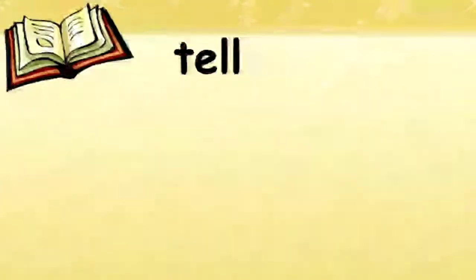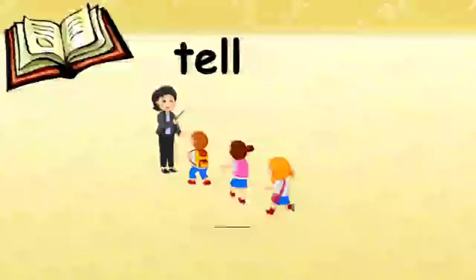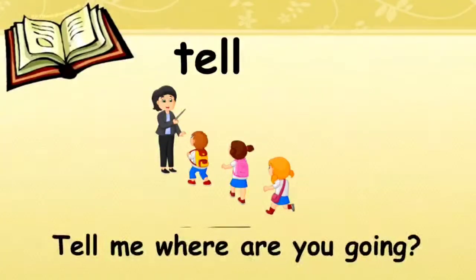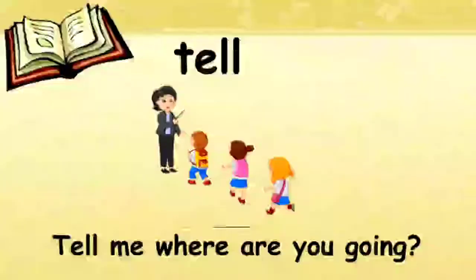Let's look at the image. You can see a lady — who is she? She is a teacher, and you can see a few children in front of her. They are wearing their school bags. What do you feel the teacher is saying? Let's read the sentence: 'Tell me, where are you going?' So the teacher is asking these children: tell me where are you going.